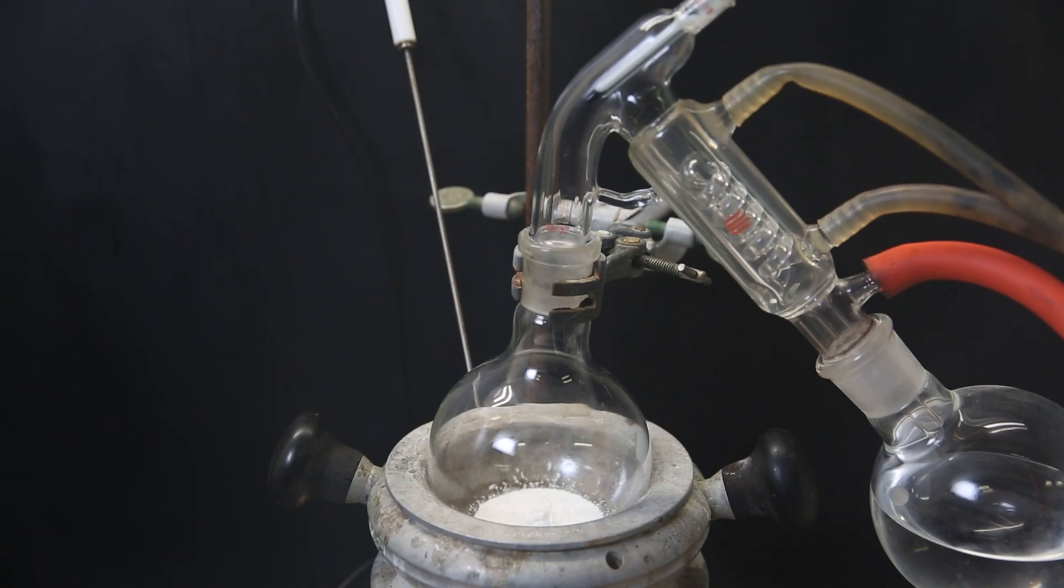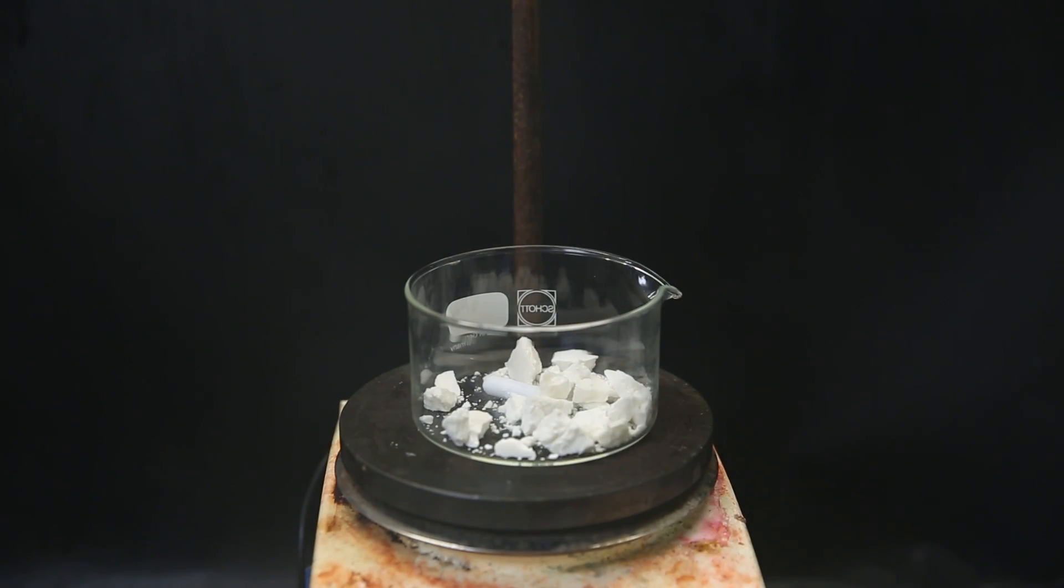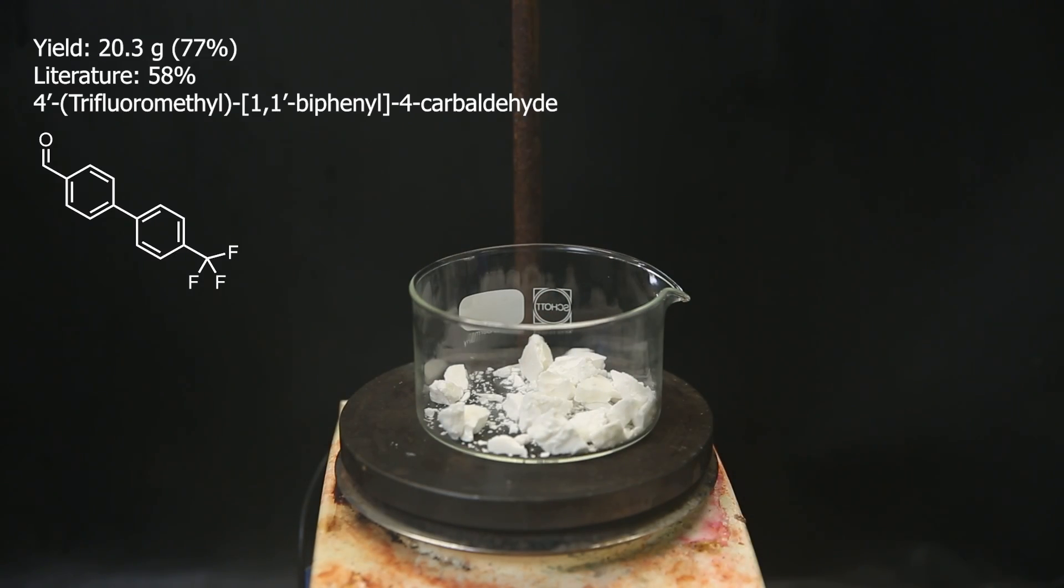After that, a white solid is left behind, and I break it up with a spatula and move it to a dish. The yield turned out to be 20.3 grams, which is 77%. This is more than the 58% from literature, but probably just because of the impurity that is in here and maybe some remaining solvent. Though it's hard to tell if these impurities are actually significant or not.